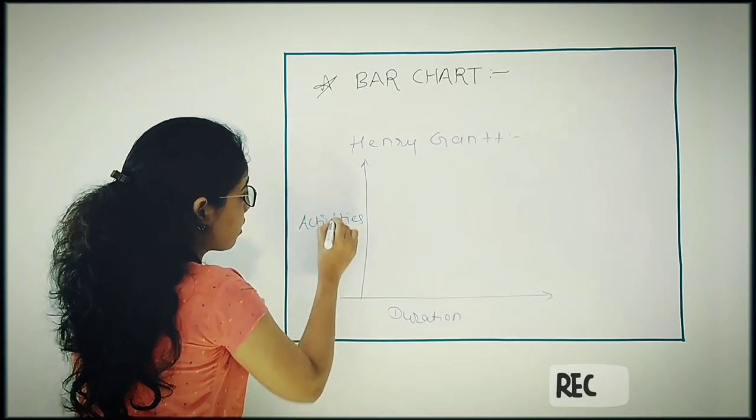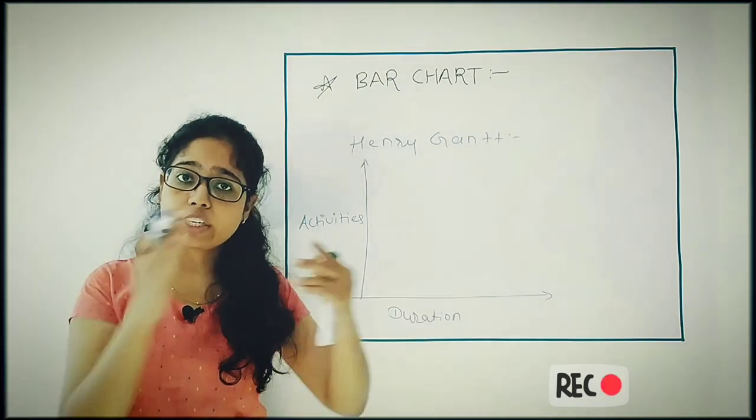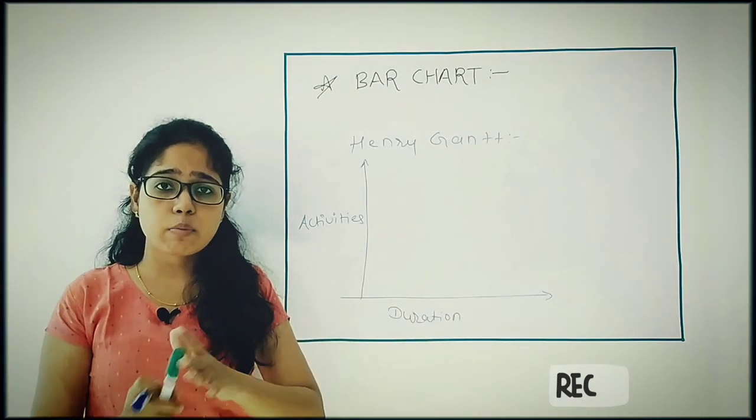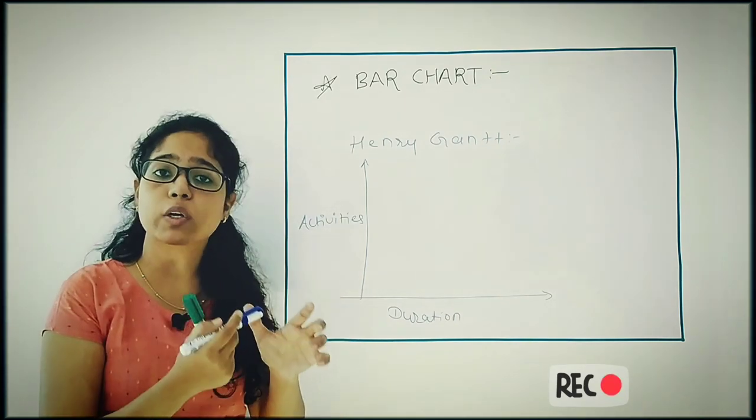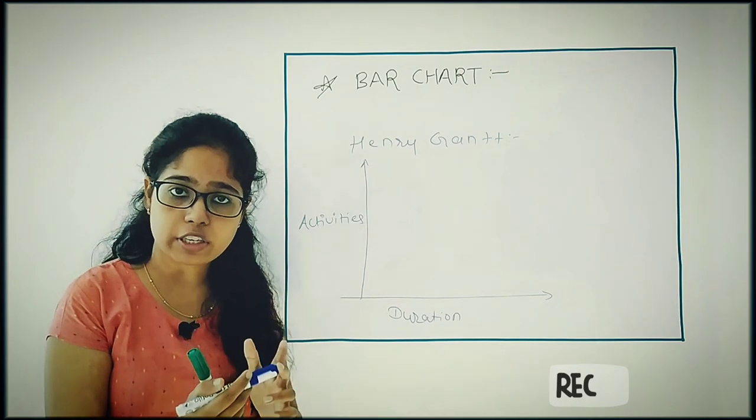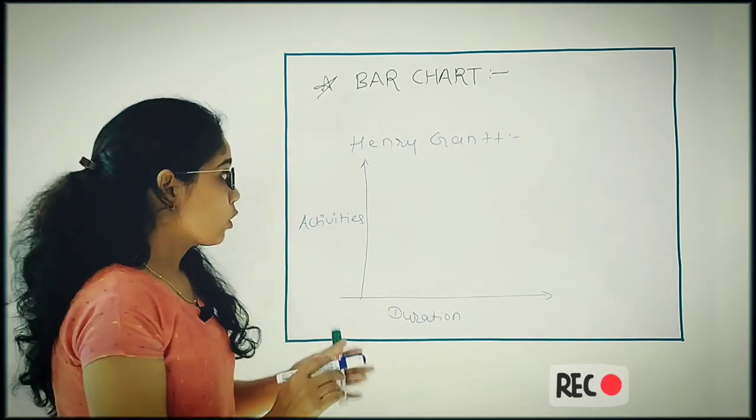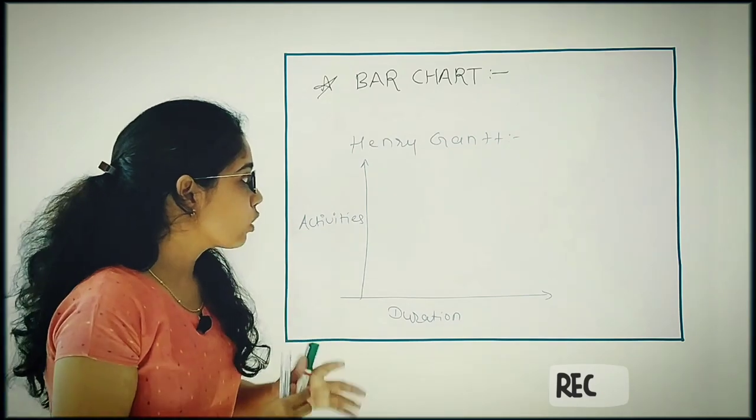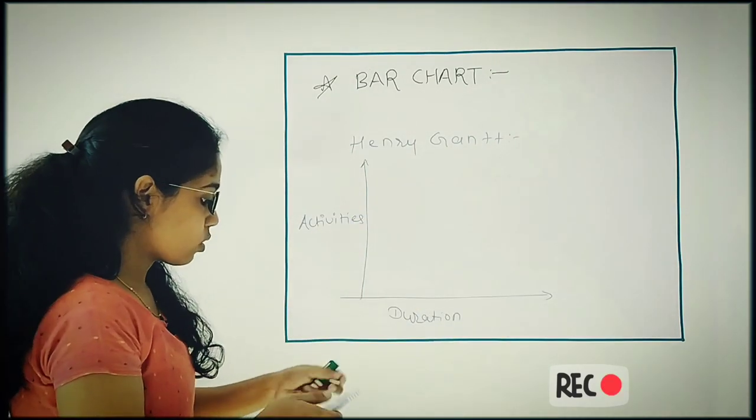And on the y-axis, you have to take your activities first. Now which activities you will take? First you have to divide the whole project into a number of sub-activities. Suppose one construction project I have and I am dividing the activities like brick work, plastering, electrification, plumbing, tiling work, painting, and likewise.